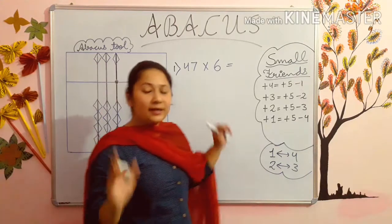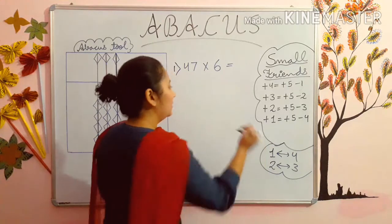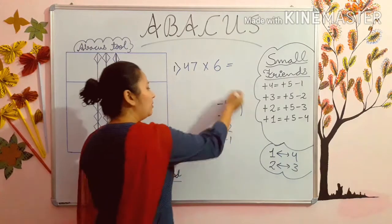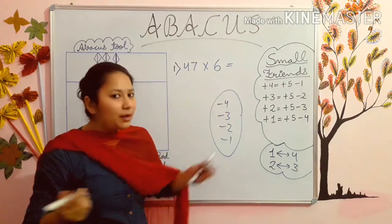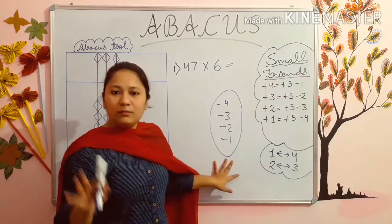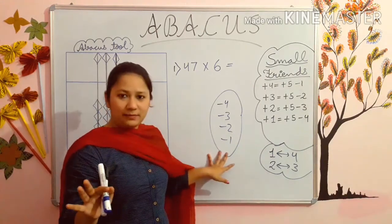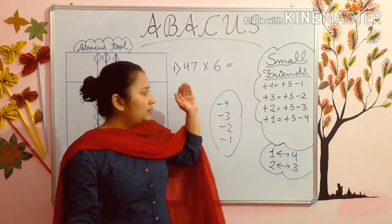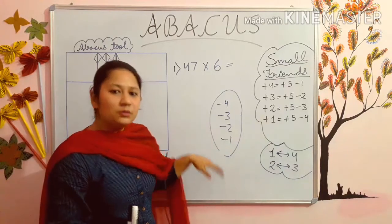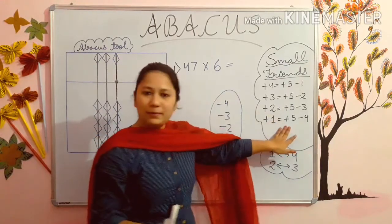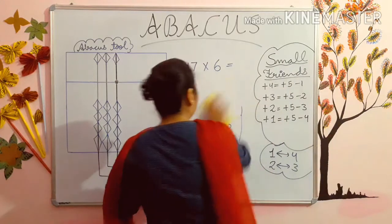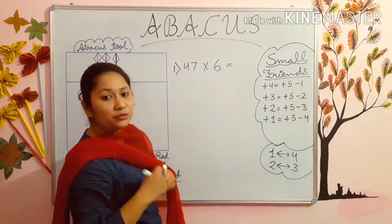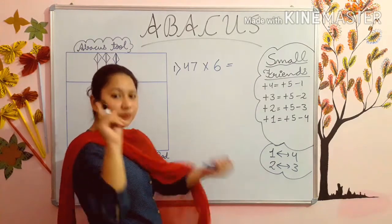Some students will think that ma'am has told us small friends like minus 4, minus 3, minus 2, minus 1 — these formulas also I have told you. But ma'am has not written this because they are not used in multiplication sums. I have told you the formulas of plus and minus 4, so today we will use the plus ones. Now students, what you do? First of all you will multiply the first number with 6.